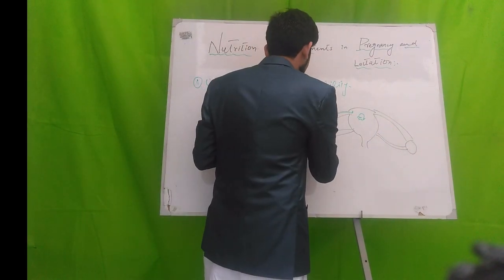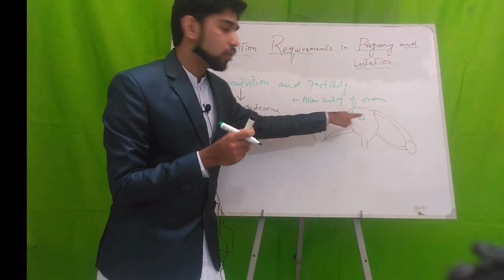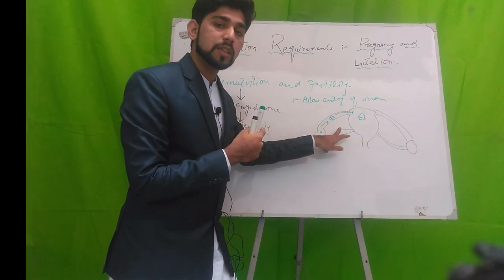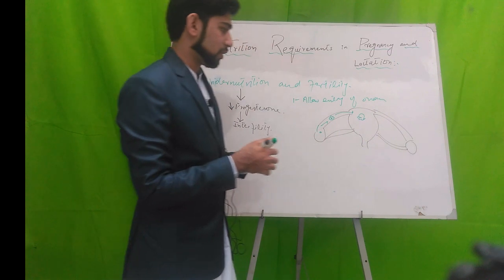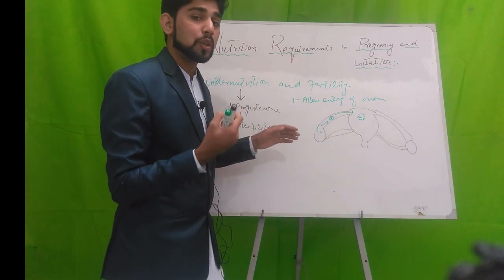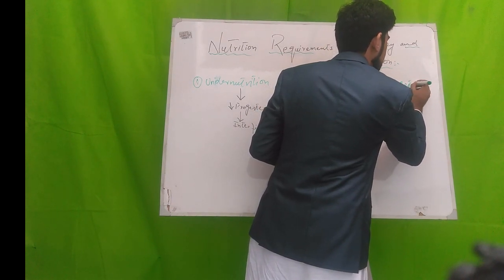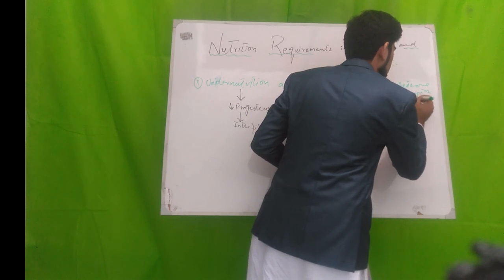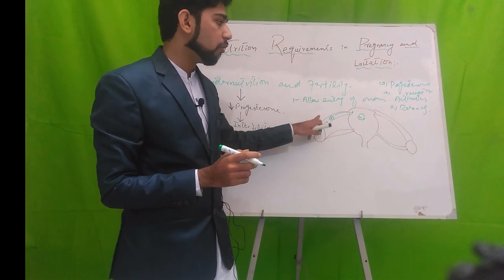Progesterone allows the entry of the ovum from the fallopian tube into the uterus. It does this by first increasing the progesterone receptors in the fallopian tube, then activating those receptors. These activated receptors exert a relaxing effect in the fallopian tube that allows the entry of the ovum into the uterus.